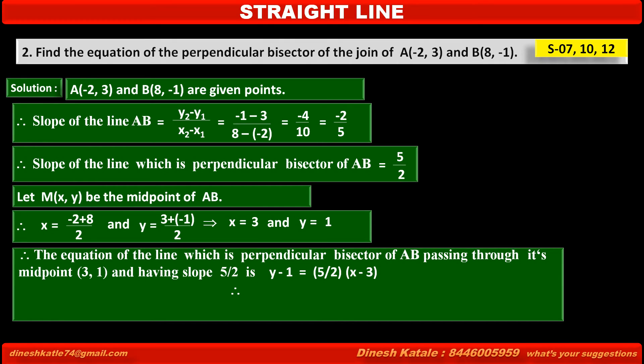By cross multiplication we get 2y minus 2 is equal to 5x minus 15. Therefore, we get 5x minus 2y is equal to 13.